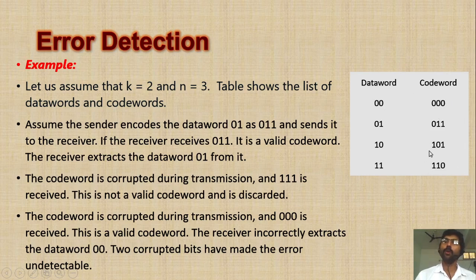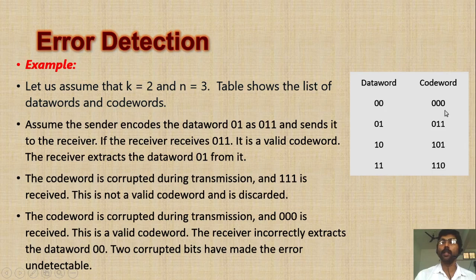In this codeword space, some invalid codewords also exist. For example, 0,0,1 is an invalid codeword; 0,1,0 is an invalid codeword; 1,1,1 is an invalid codeword. Like that, many invalid codewords are here. Only 4 codewords are valid; the remaining codewords are invalid.